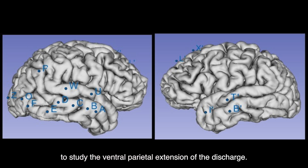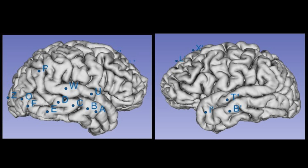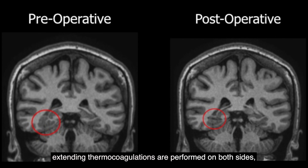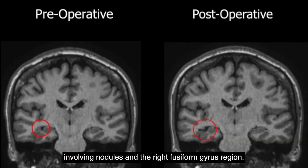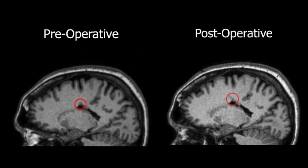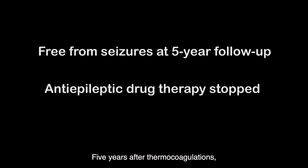A right parietal electrode is placed to study the eventual parietal extension of the discharge. Based on SEEG data, extended thermal coagulations are performed on both sides, involving the nodules and the right fusiform gyrus region. Five years after thermal coagulation, the patient is free from seizures and anti-epileptic drugs have been completely stopped.